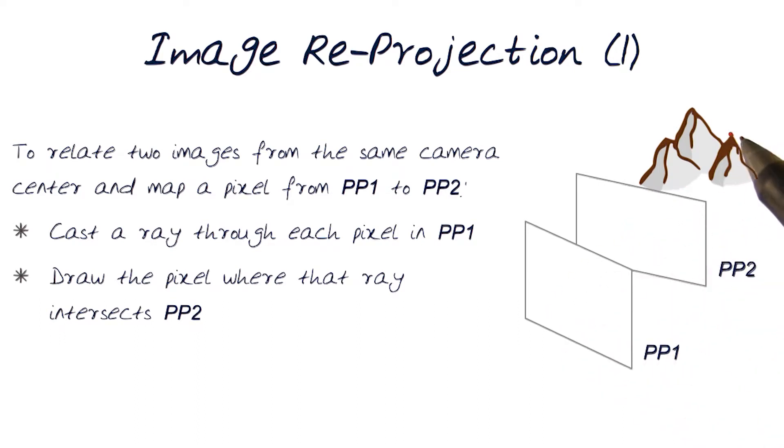So it basically means we now need to cast a ray through each pixel in PP1 and draw the pixel where that ray intersects PP2.